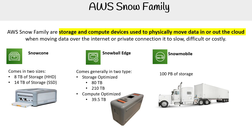Then you have Snowmobile, which is for transporting 100 petabytes of storage. As the picture implies, it's that big cargo container in the back — there's basically a data center of storage in there, and you load up your data and they drive it to AWS. This data is delivered to Amazon S3.